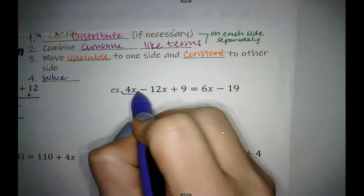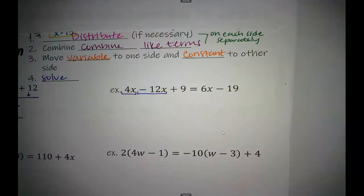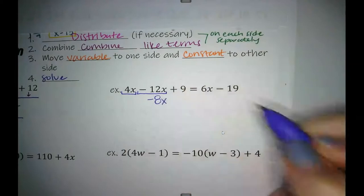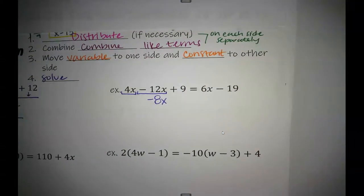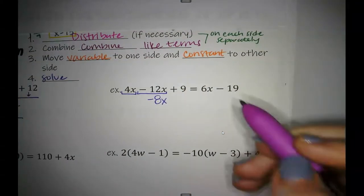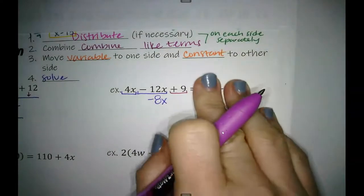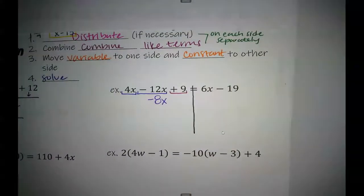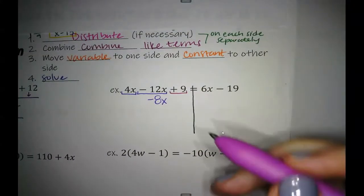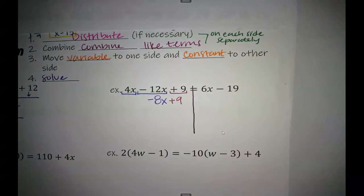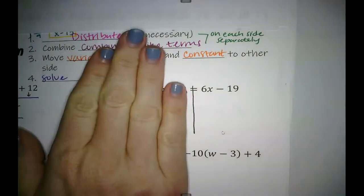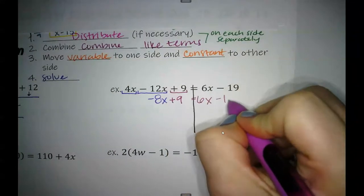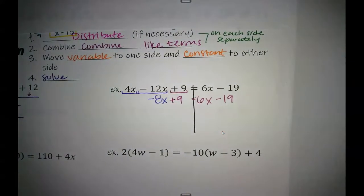So I got 4x, and then I got a minus 12x. So 4 minus 12 gives me a negative 8. Remember, we still got that x. And then we only have one constant. I'm already drawing my wall. I'm already just working on one side. So we got plus 9 here. On this other side, is there anything to combine? No, we cannot combine the 6x and the minus 19.